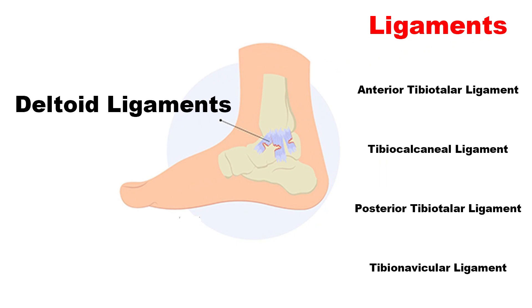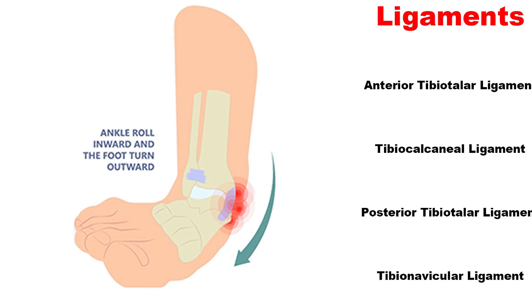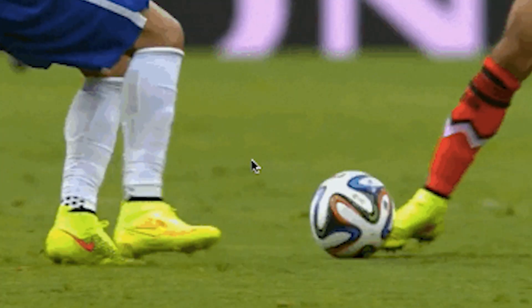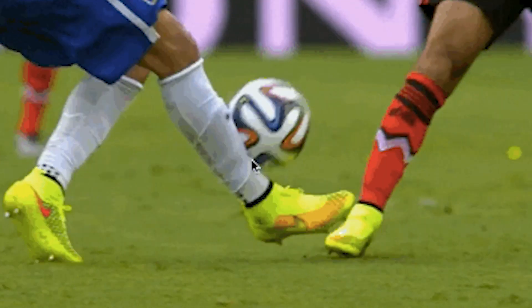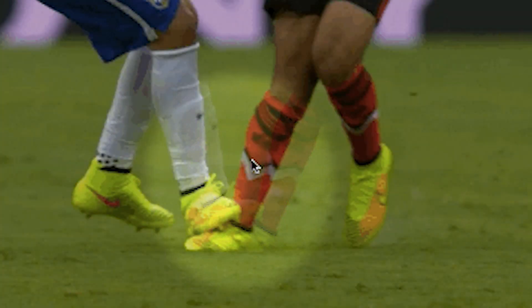The same can happen to the deltoid ligaments which support the inner medial ankle. These ligaments are more dense and stronger than the lateral ligaments, but they can also be torn if the ankle is sprained in a position of external rotation and eversion.